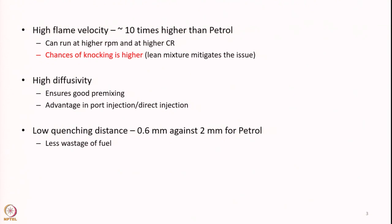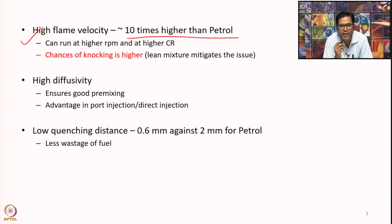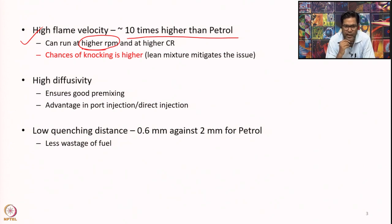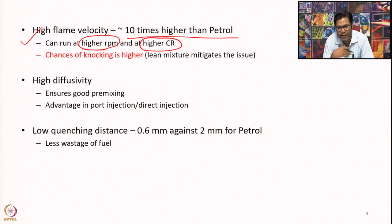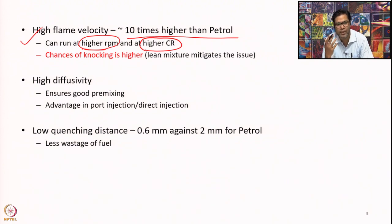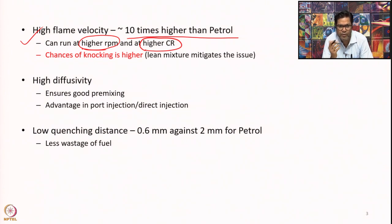Another factor already discussed is hydrogen's high flame velocity — almost 10 times higher than petrol. This means it burns in a very short time, enabling the engine to run at higher RPM. We can also use a higher compression ratio because hydrogen does not suffer from auto-ignition concerns the way petrol does. With petrol, going to compression ratios of 14, 16, or 18 like a diesel engine risks auto-ignition before the spark, causing a mini-blast or knocking inside the engine.